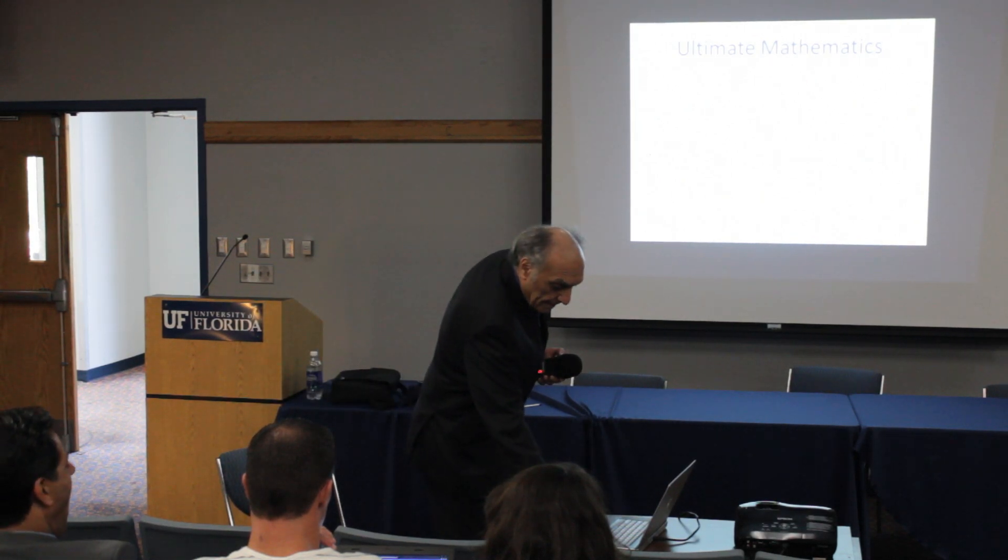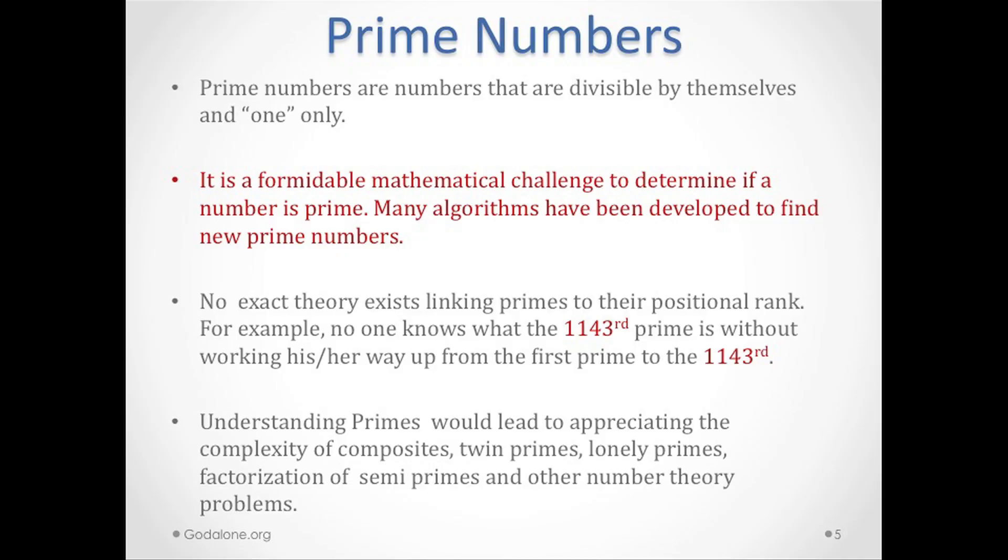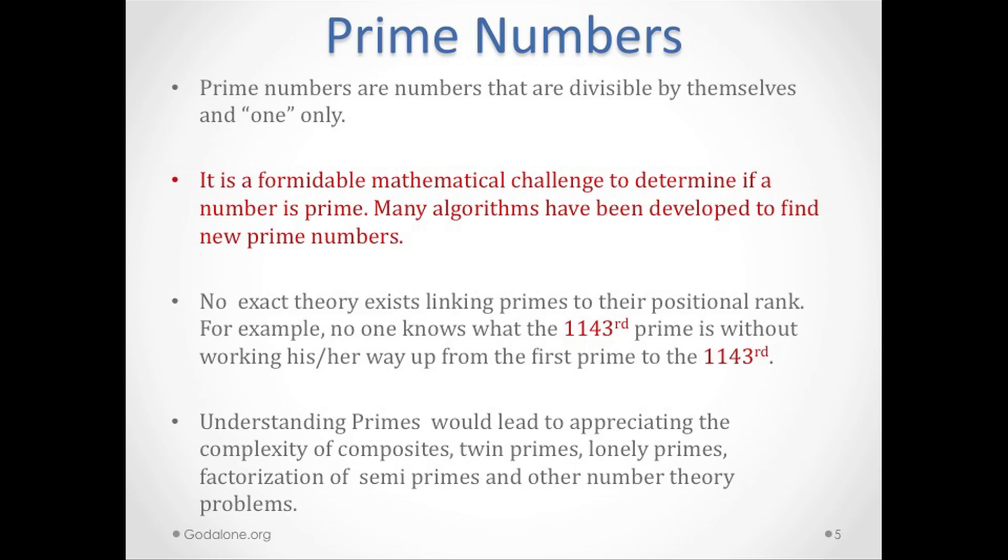Prime numbers are numbers that are divisible by themselves and one only. You cannot divide by anything else, just by itself and one. So that's the definition of a prime number. By this definition, one is not a prime number, so the first prime number is two. It is a formidable mathematical challenge to determine if a number is prime. Many algorithms have been developed to find new prime numbers.